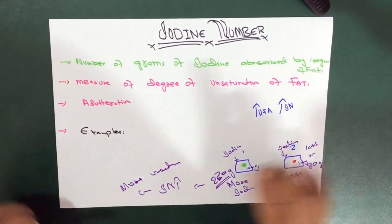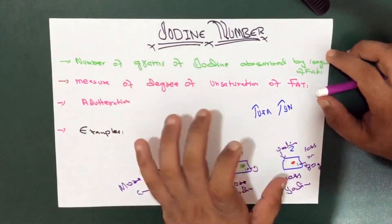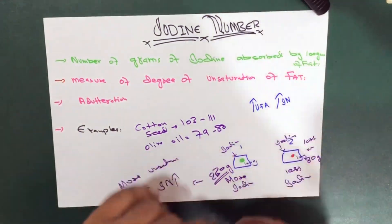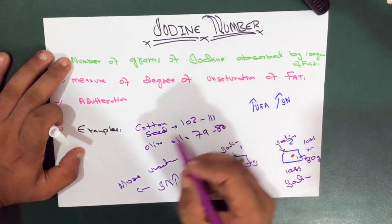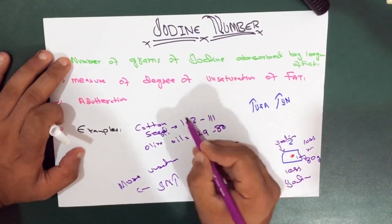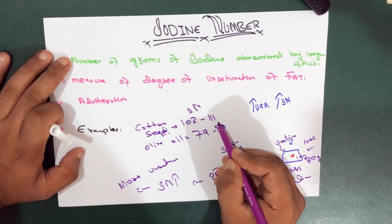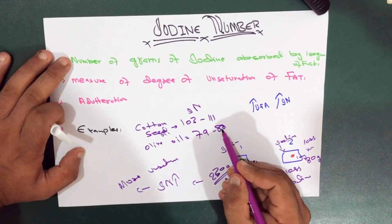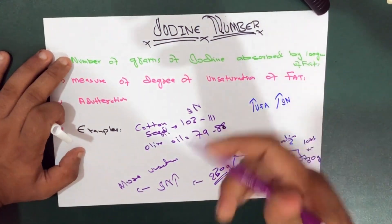This was the basic idea regarding iodine number. I have to add a few other things. For example, we have two types of oil: cotton seed oil, which has an iodine number between 103 and 111, and olive oil, which is between 79 and 88.